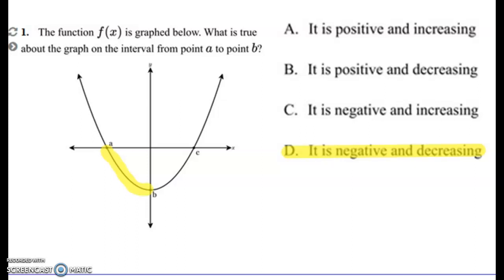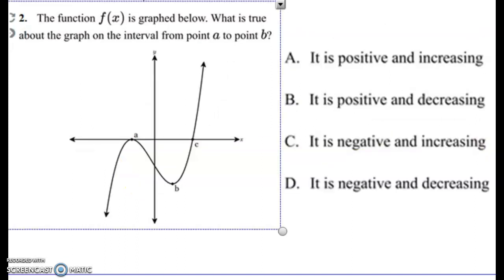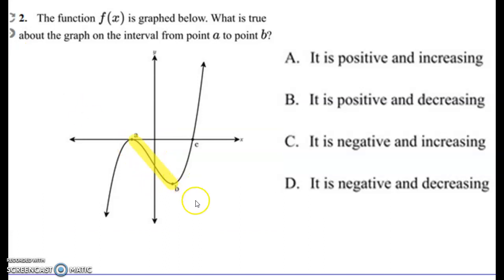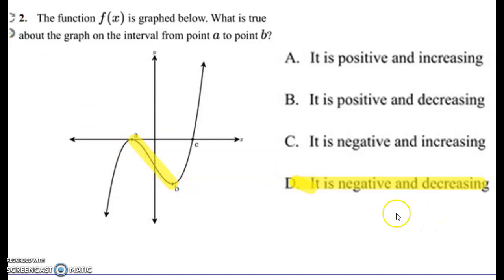Another example: what is true about the graph on the interval between point A and B? Finding A and B — it's in the negative area, below the x-axis, and it's also going down, so it's decreasing. The answer is D: negative and decreasing.